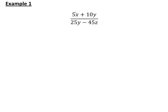Looking at numbers first of all, we have a 5 and a 10 on the numerator, and a 25 and a 45 — ignoring the negative sign for now — on the denominator. What is the highest common factor of these four numbers? The answer is that the highest common factor is 5.